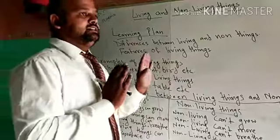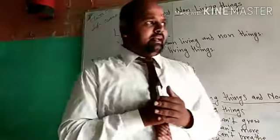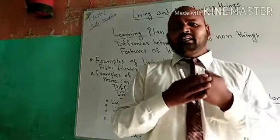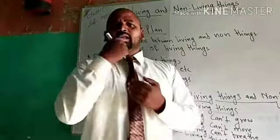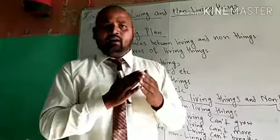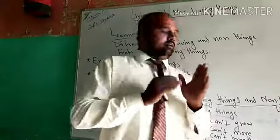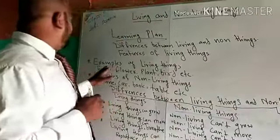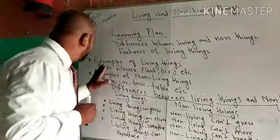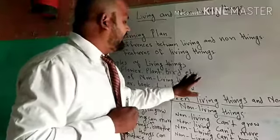Features of living things — दो ही topic हैं। हम लोग जल्दी से देखते हैं। सबसे पहले, हमारे nature में दो प्रकार के चीज होते हैं: living things और non-living things। Living things के examples — अगर मैं board पर बताता हूँ: fish, flower, plants, bird, etc. यह कुछ examples हैं, और भी बहुत सारे examples हैं — आप video के last में comment कर सकते हो।